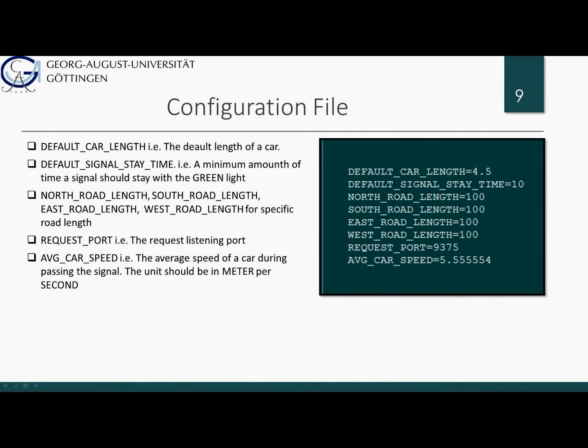In our project, we have a simple configuration file where we can define the default car length, default signal stay time, different lengths of different roads, the request access port, and the average speed of a car.